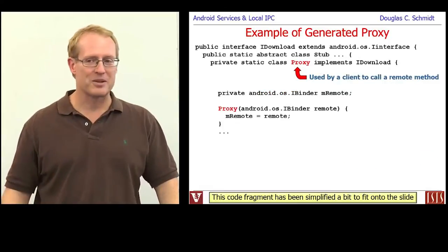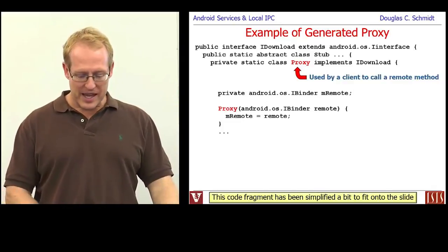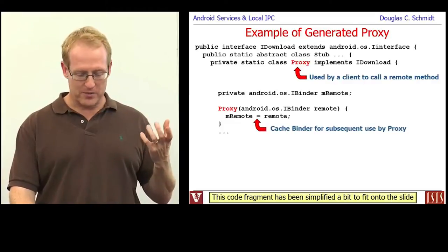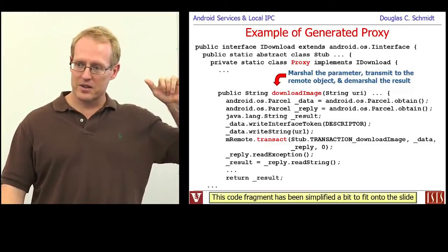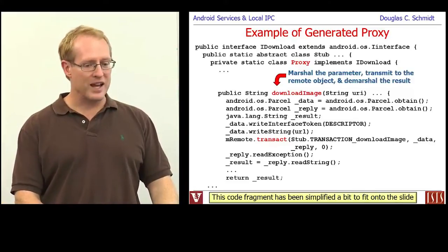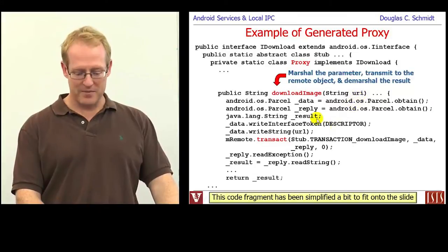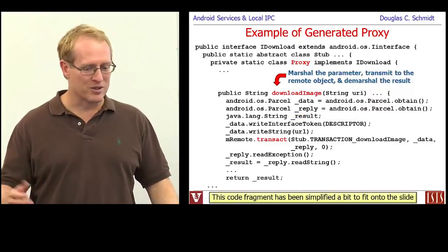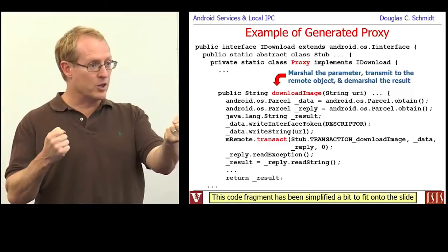Let's look at the proxy. The proxy is nested inside of the stub. Basically, the proxy stashes away the iBinder and then uses it when the client calls a method through the proxy — in our case, downloadImage. When the client calls downloadImage on the proxy, it takes in the string URI. This code is all auto-generated by the AIDL compiler. It's pretty low-level and nasty — it creates a pair of parcels to contain the data we're going to send and to get the reply back.